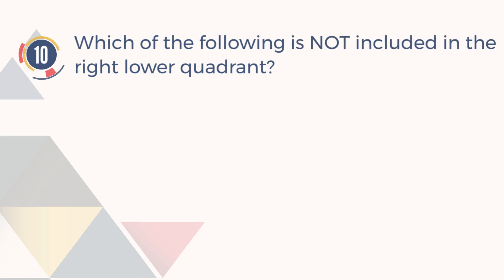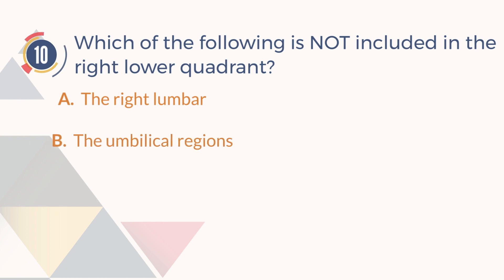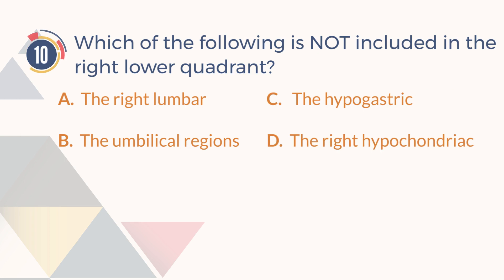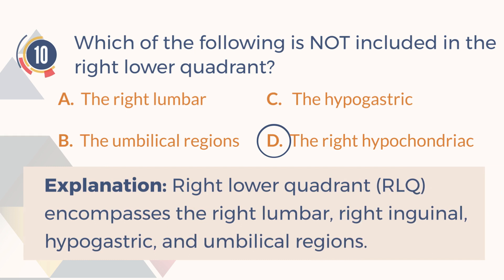Number 10. Which of the following is not included in the right lower quadrant? A. The right lumbar. B. The umbilical regions. C. The hypogastric. D. The right hypochondriac. The answer is D. The right hypochondriac. Explanation: The right lower quadrant (RLQ) encompasses the right lumbar, right inguinal, hypogastric, and umbilical regions.